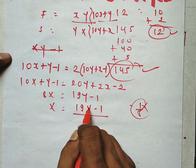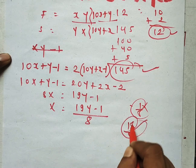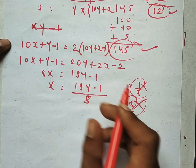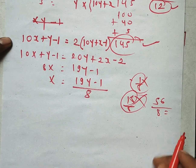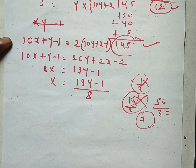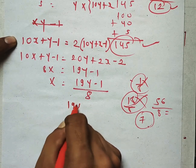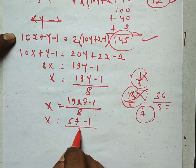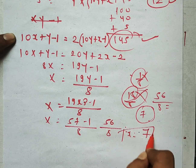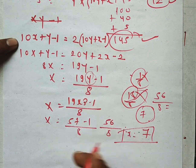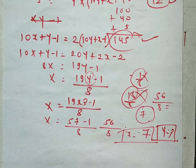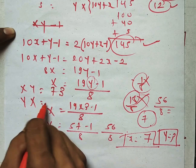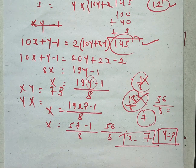If y equals 1, we get 18 upon 8 — a fraction, not valid. If y equals 3: 19 times 3 is 57, minus 1 is 56, divided by 8 gives x equals 7. So x equals 7 and y equals 3. The father's age is XY, which is 73, and the son's age is the reverse, which is 37.